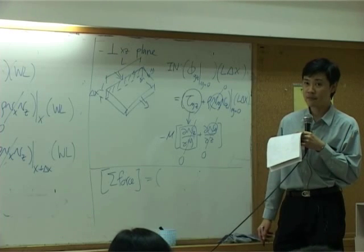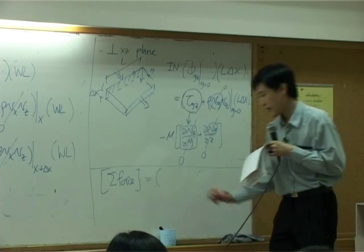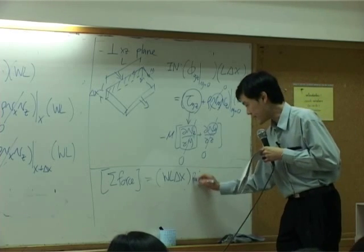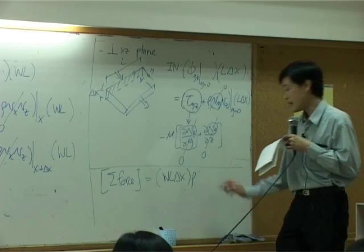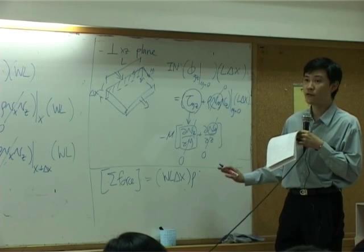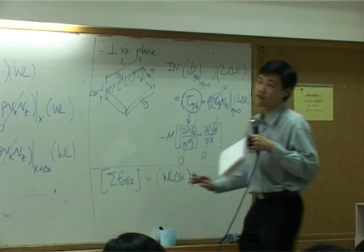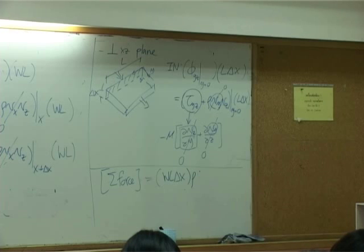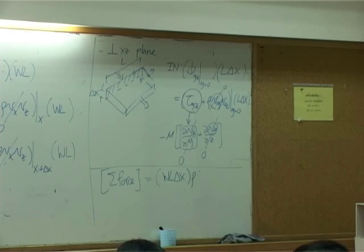W times L times delta X. So W L delta X, that's the volume. So you multiply by density, it turns to be mass. And multiply by g, that's turned into force or weight. But right now, g itself is going in this direction. The angle here is beta.